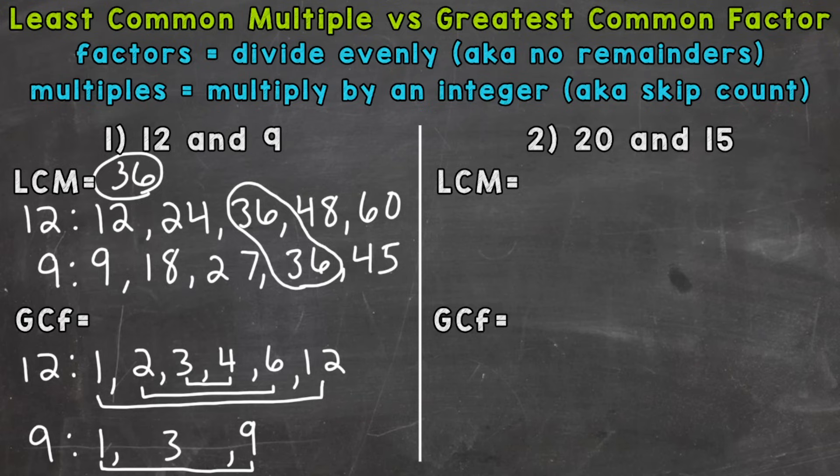3 can go into 9. But we only need to list 1, 3. We don't need to put 2 there. So 1, 3, and 9 are the factors of 9.